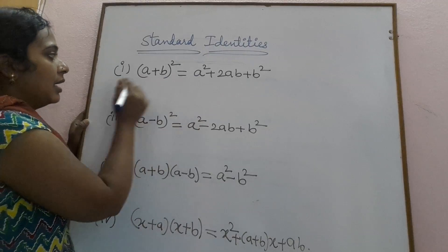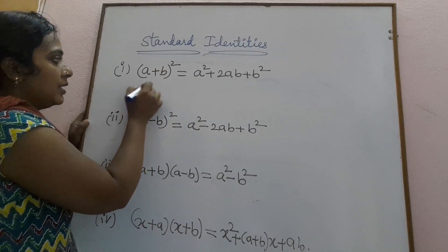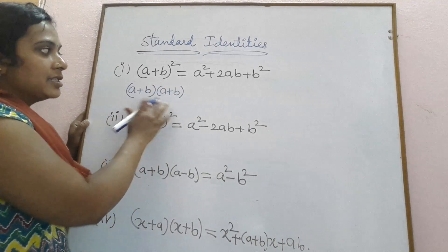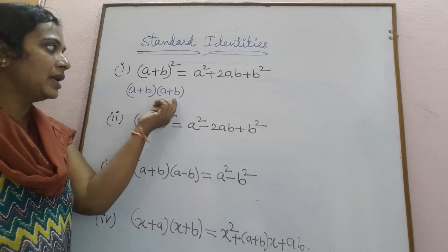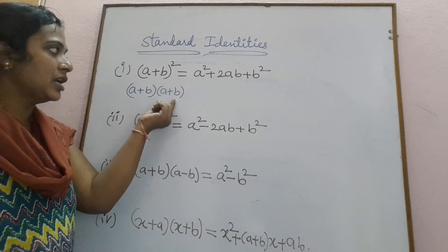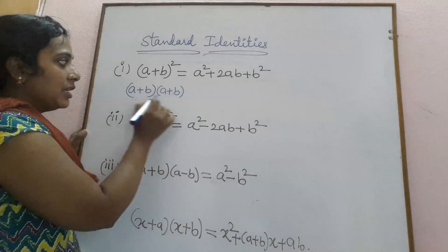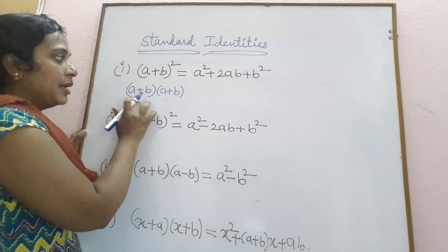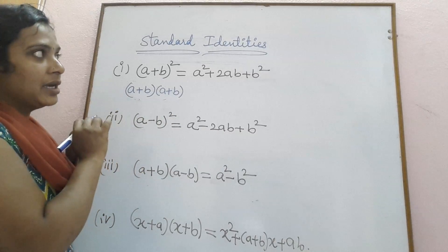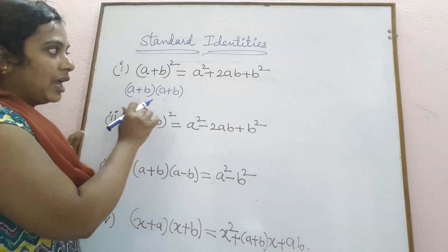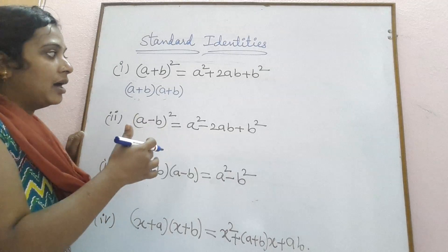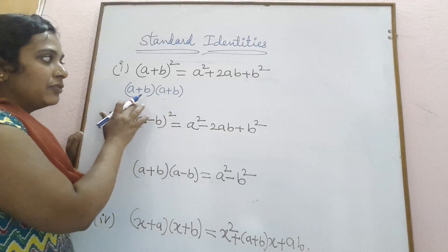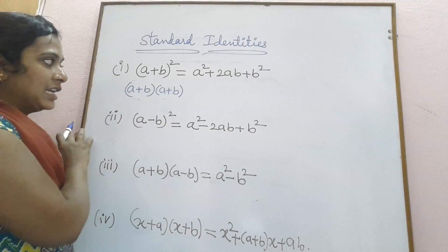How do we get the first identity? A plus b whole square can be written as a plus b into a plus b. Here we are taking two binomial expressions and multiplying these two binomial algebraic expressions. In doing so, we are indirectly explaining the multiplication of two binomial expressions.